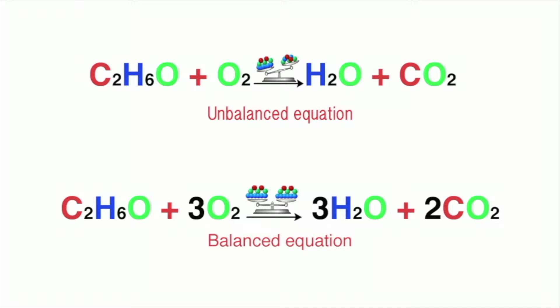The imbalance is corrected by adding the coefficient in front of the compounds to represent their relative quantities. These coefficients can then be used to balance the equation. This is the balanced equation for the combustion of ethanol.